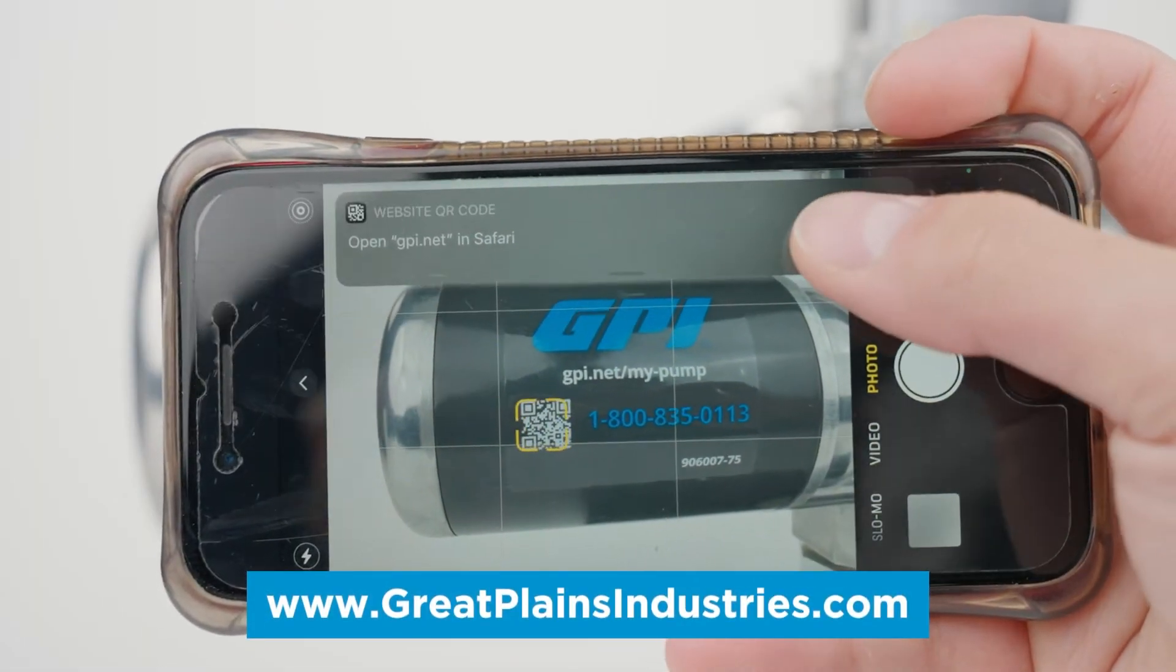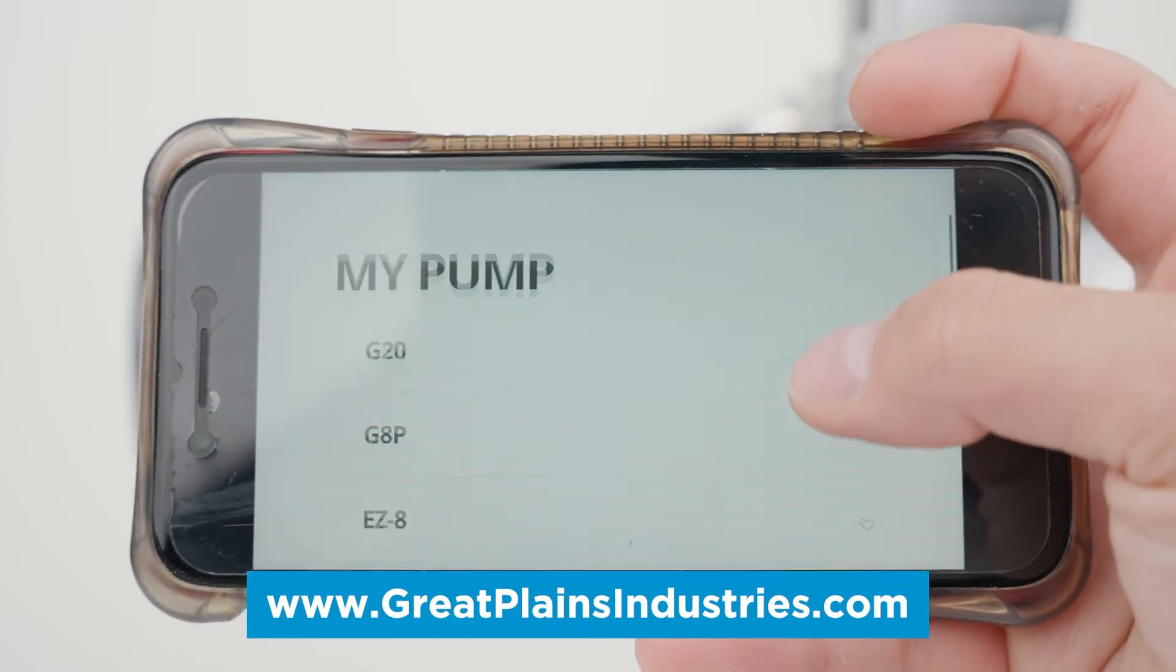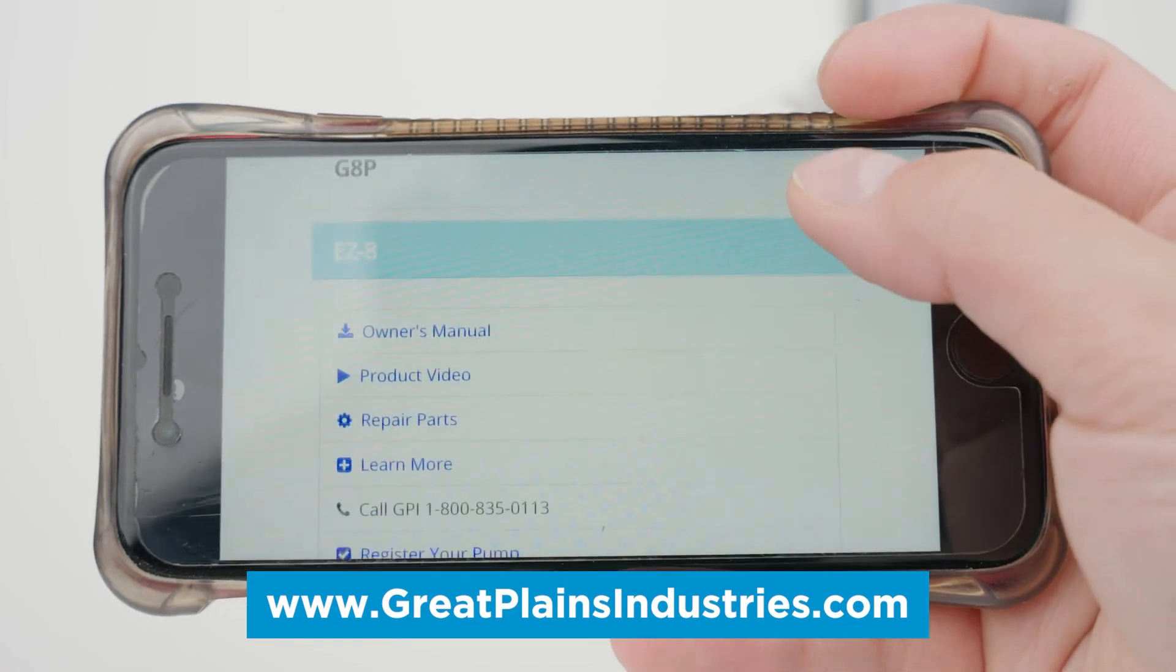If replacement parts are needed, they can be ordered through our website by scanning the QR code on the side of your pump with your smartphone.